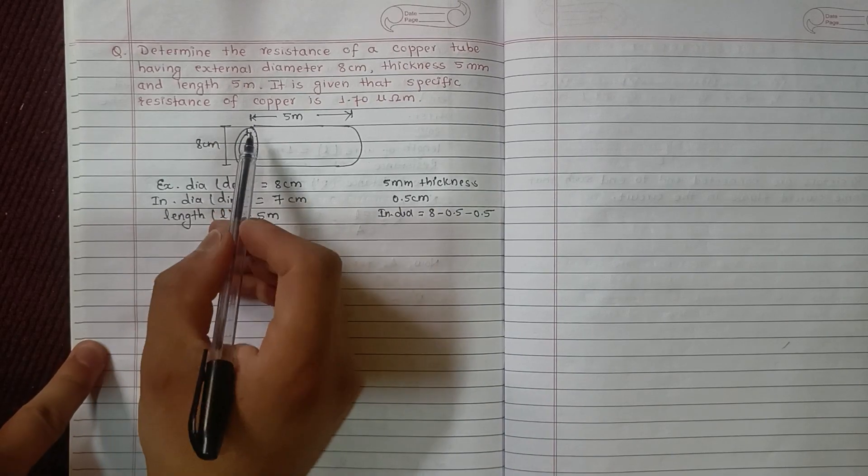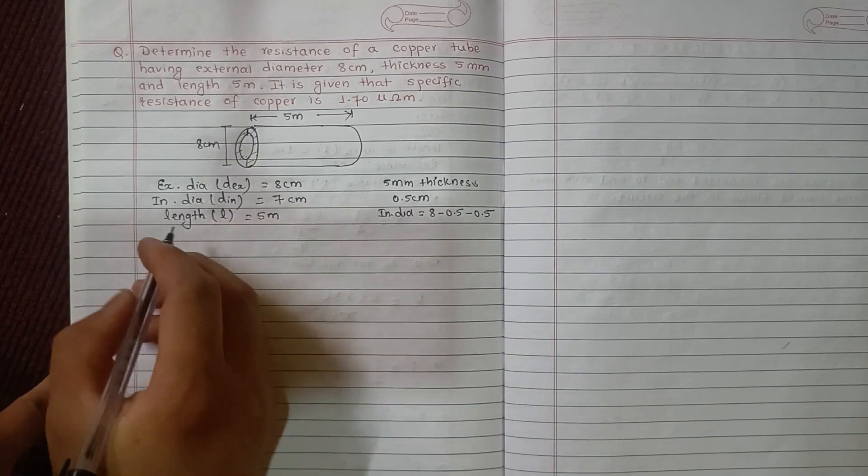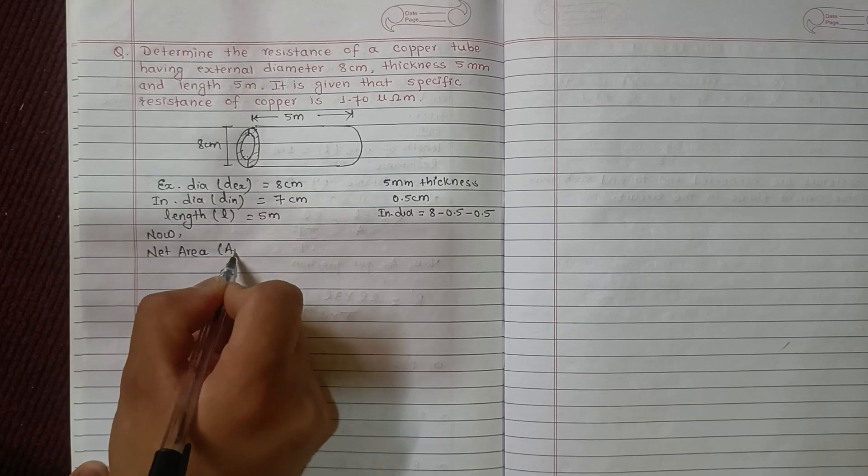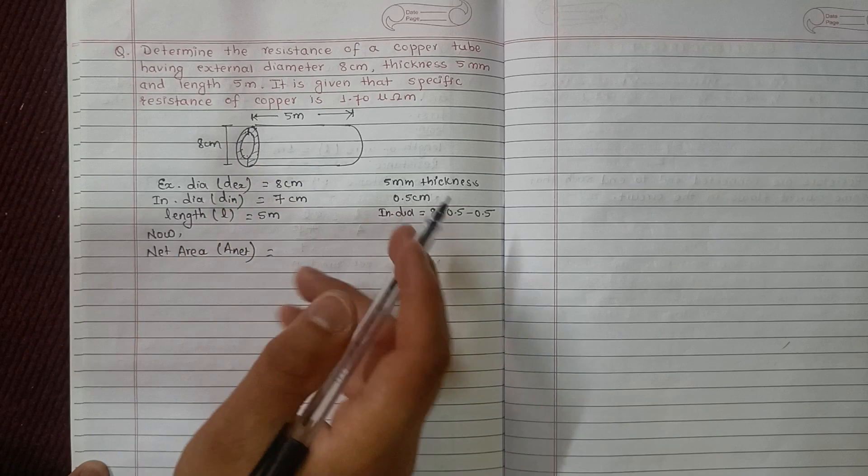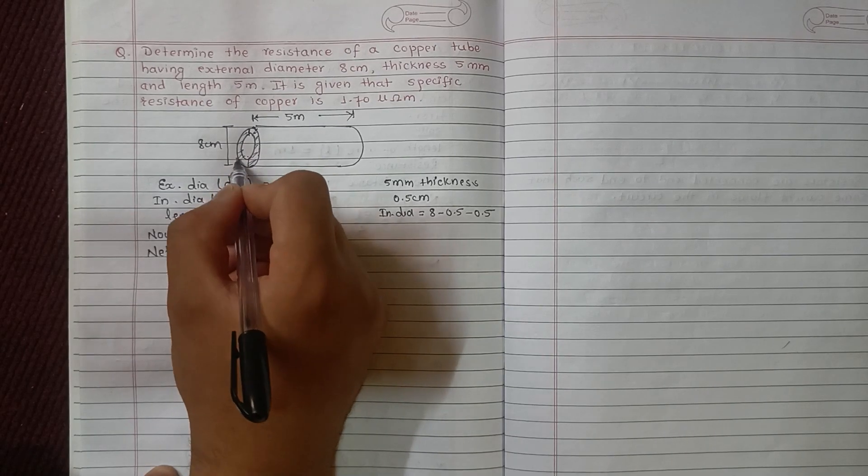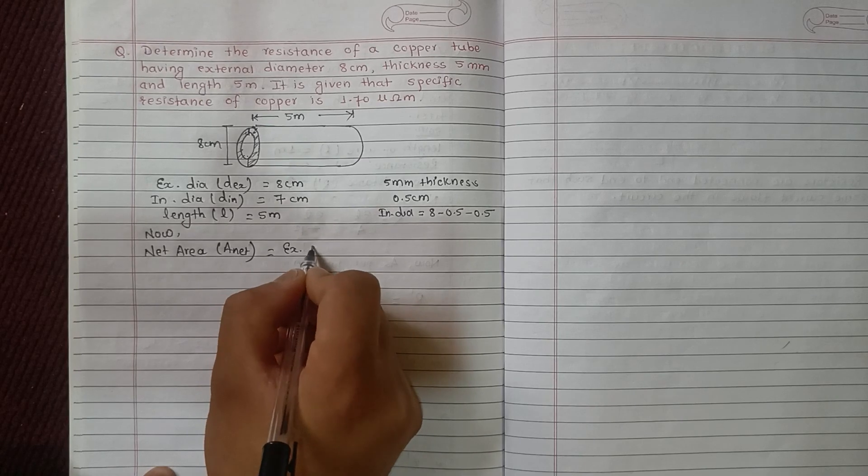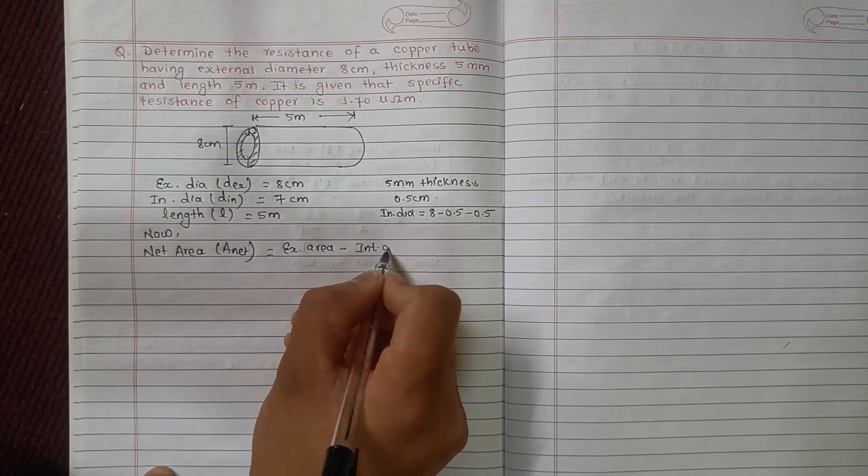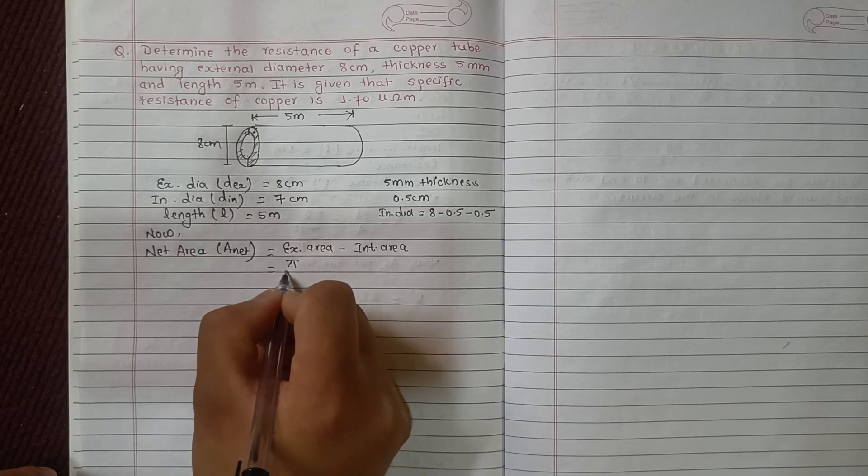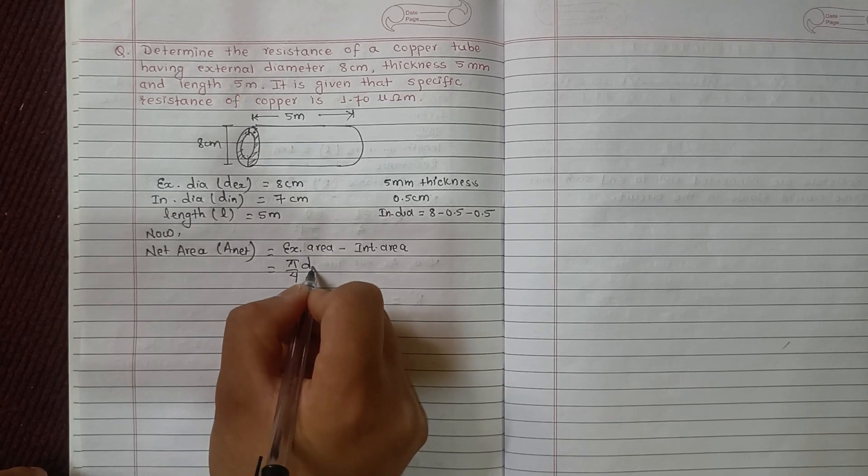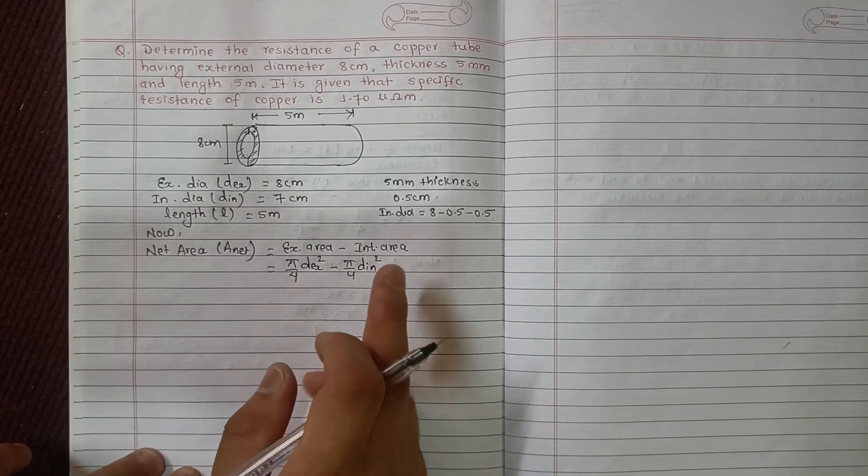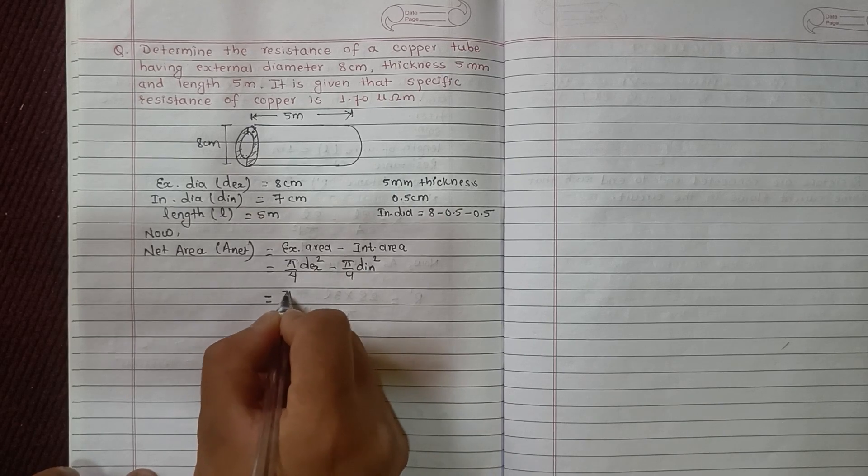Now the net area is the cross-sectional area. The area is the external diameter area minus the internal diameter area. The area formula for cross section: area equals π/4 times the square of external diameter minus π/4 times the internal diameter squared.